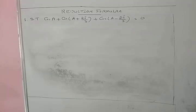This is the continuation of reduction formulae. The first problem: show that cos A plus cos(A + 2π/3) plus cos(A - 2π/3) is equal to 0.